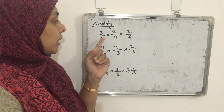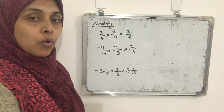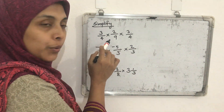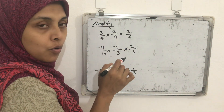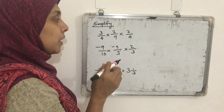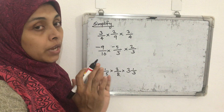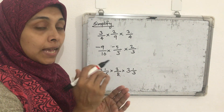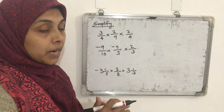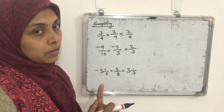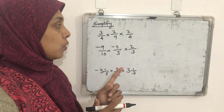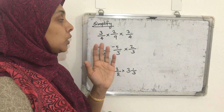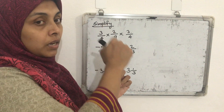Simplify. If there are three rational numbers for multiplication, what we can do — look at these three rational numbers: 3/4 into 2/9 into 3/4. In this case, if it is multiplication only, we can use this easy shortcut method. But if any rational numbers have an addition or subtraction sign, don't use this method.